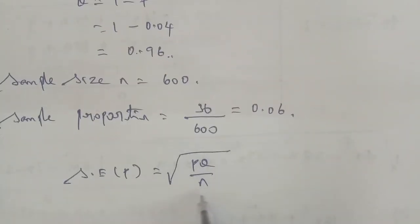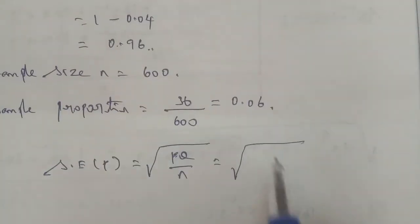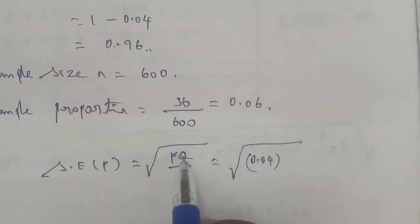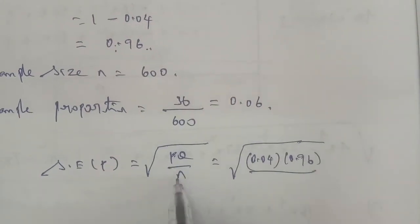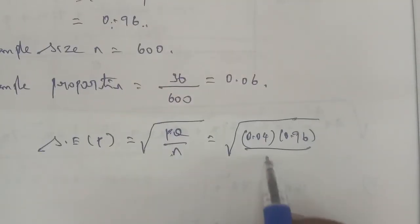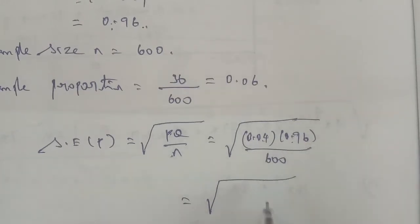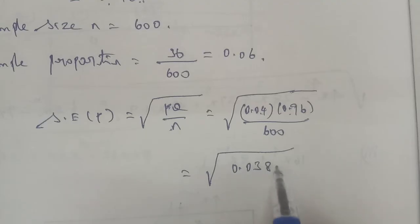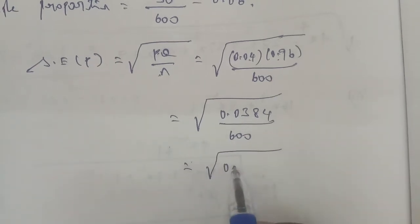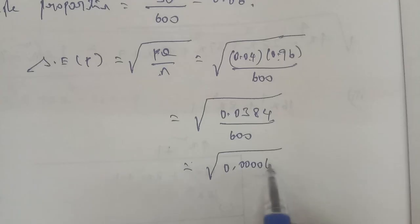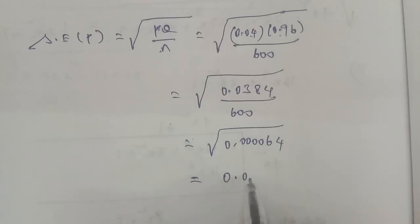The formula for standard error is the square root of PQ divided by n. Substituting the values: P equals 0.04, Q equals 0.96, divided by n equals 600. This gives square root of 0.000064, and taking the square root, the answer is 0.0018.